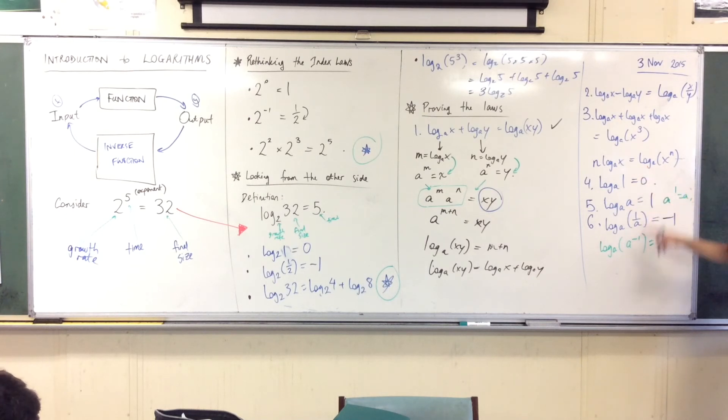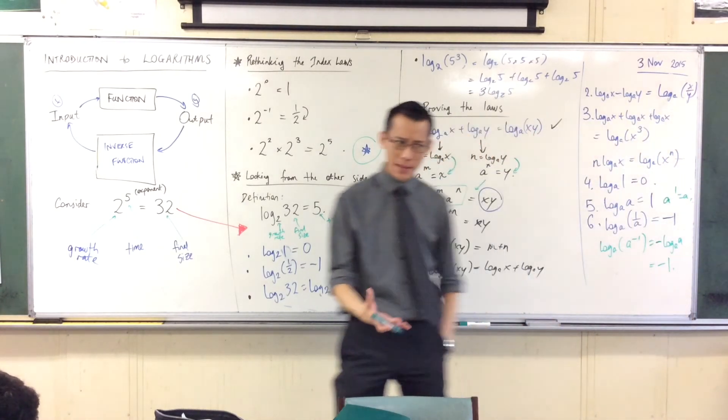Using this one here, the power should come out the front. You see that? The power can jump out the front: minus one. But like two minutes ago you told me what log base a of a is. It's one, right? So you've got the minus sign hanging out the front. Does that make sense?